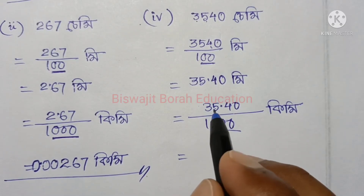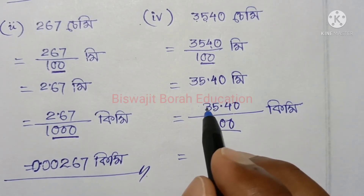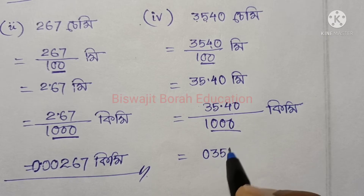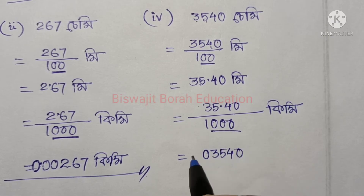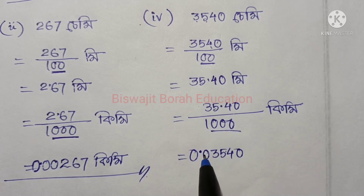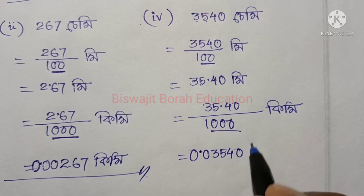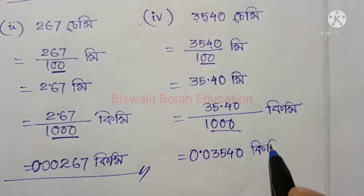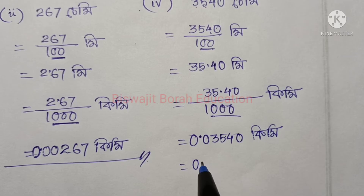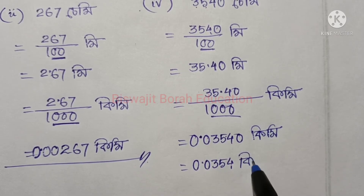So I have 0.3540 and I have 0.3540 to the kilometer. I have 4.420, I have 3.520 km. I have 0.0354.